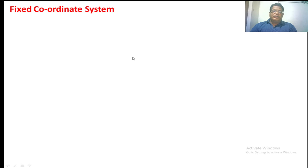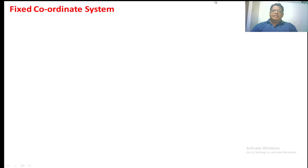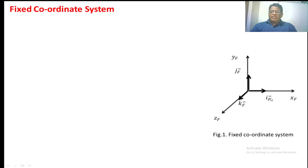To describe the roadway, first we are going to see the fixed coordinate system. The fixed coordinate system is similar to the conventional coordinate system with the x-axis, y-axis, and z-axis. In each axis, we are defining the unit vector. We are representing the x-axis as xf, the y-axis as yf, and the z-axis as zf. The unit vector in the x-axis is denoted by i-f bar, the unit vector in the y-axis is denoted by j-f bar, and the unit vector in the direction of the z-axis is denoted by k-f bar. We are fixing the roadway to the x-axis.